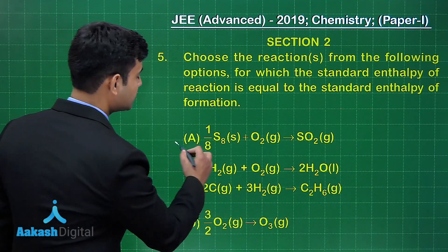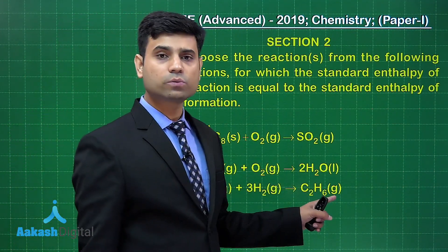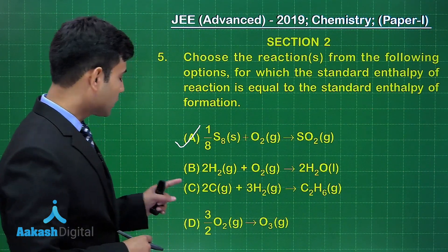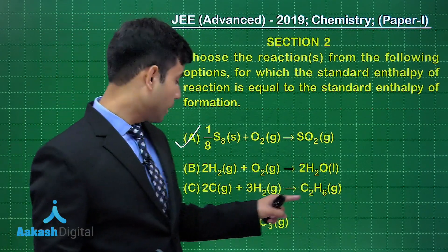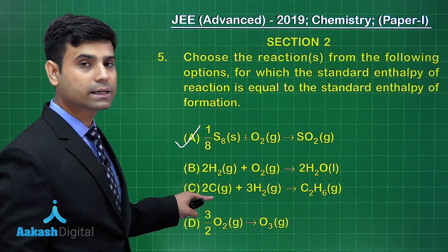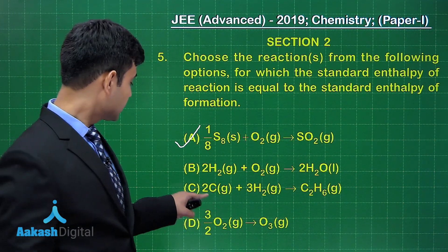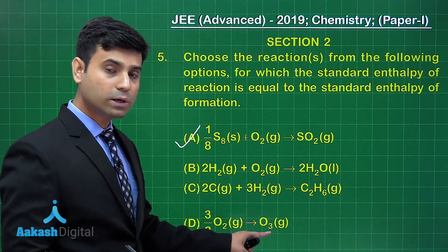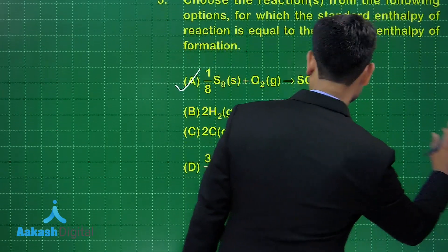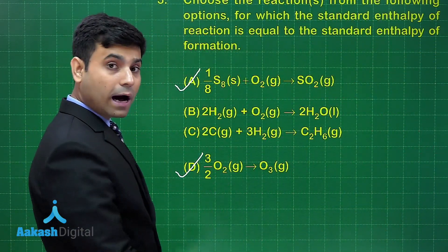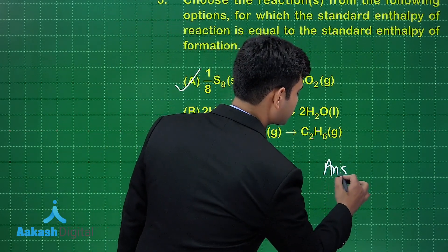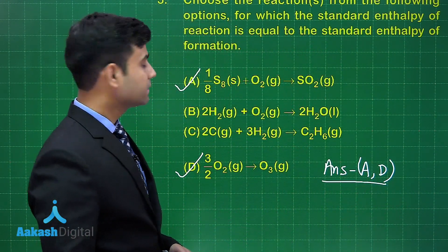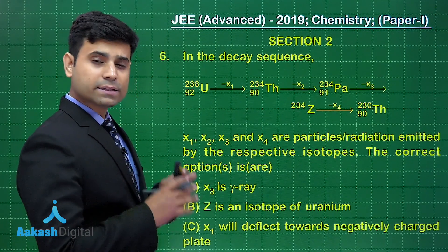Option A gives standard enthalpy of formation. Option B has two moles of H2O, so that enthalpy will not equal standard enthalpy of formation. In option C, C2H6 is formed from carbon in gaseous state — it should be graphite — hence this cannot be standard enthalpy of formation. Option D has one mole of ozone formed from oxygen gas, so this is also correct. The correct answers are option A and option D.